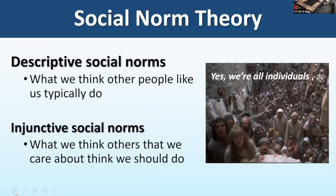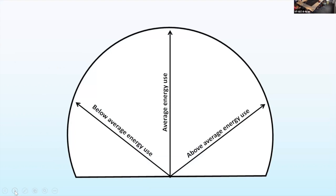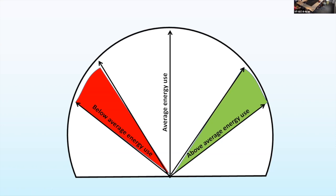A really famous experiment by Wes Schultz and colleagues in California: they wanted to reduce people's energy use in apartment buildings. They sent handwritten letters telling each resident the average energy use in their building and their own usage, with a message about how to reduce energy. The people who had above-average energy use reduced when they saw they were higher than average—it worked. But the people below average? They increased—we call this the boomerang effect. Something you didn't intend to happen, but it makes sense from the theory.